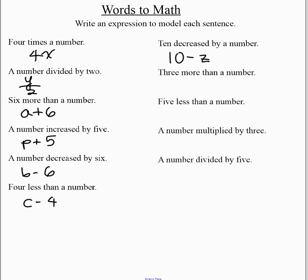Three more than a number, let's take my number, let's call it m, and we'll add three. Five less than a number, we're going to take our number, let's call it n, and we're going to take away five.